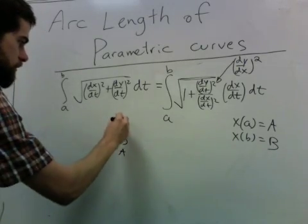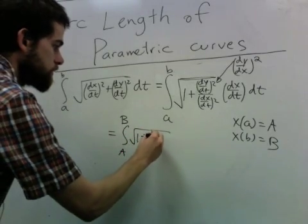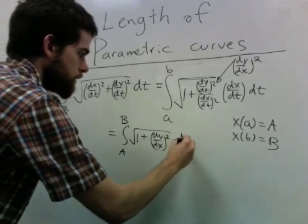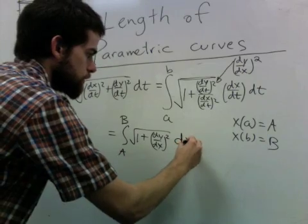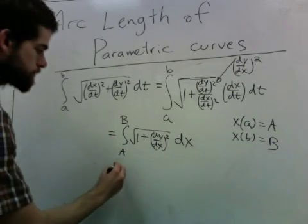So we're really doing the integral from A to B of the square root of 1 plus dy/dx squared dx. And this is by the chain rule.